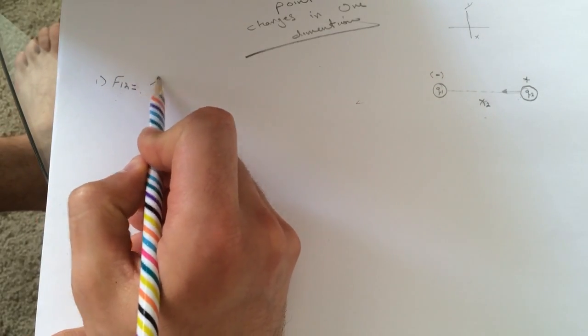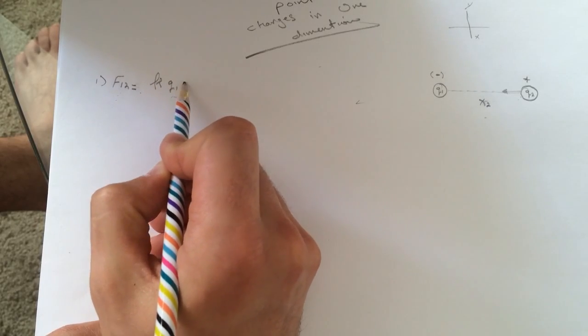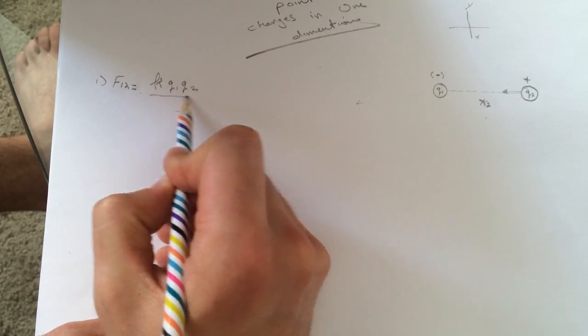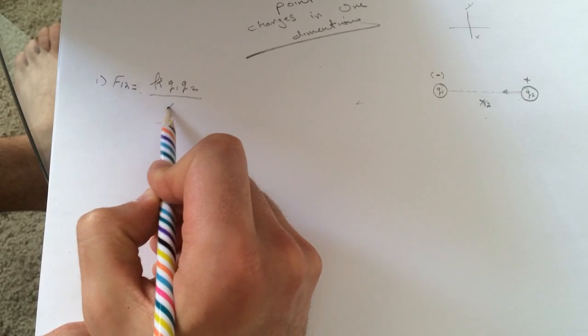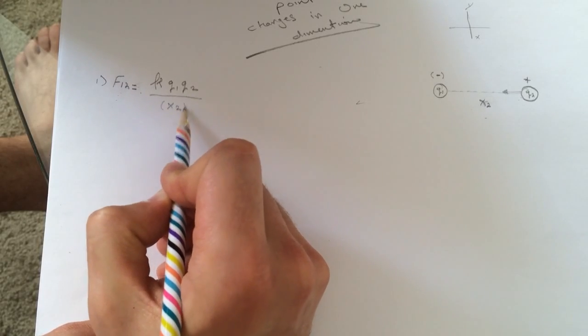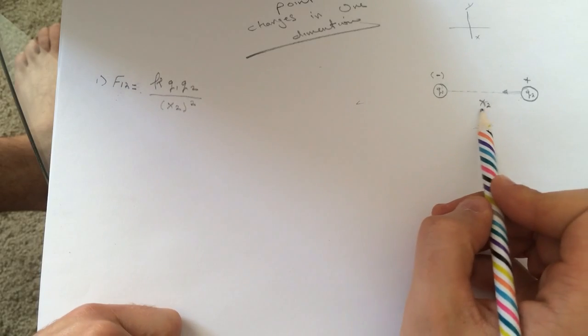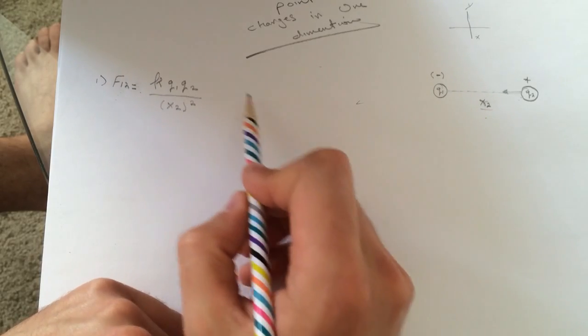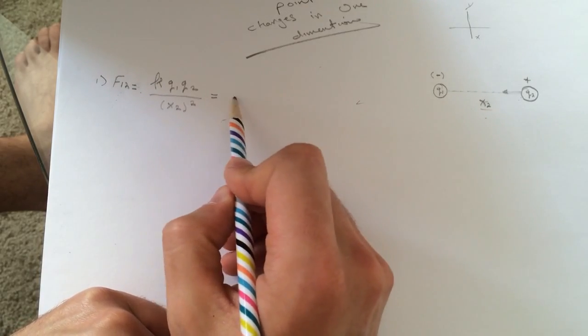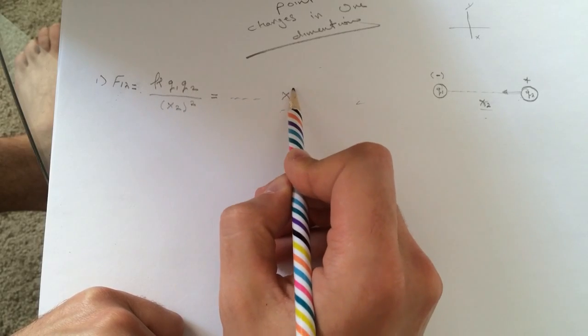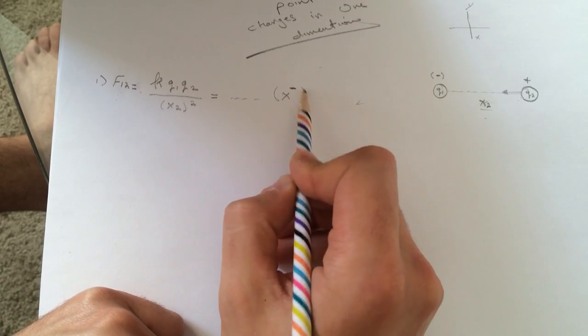So just plug in your numbers k, q1, q2 and over x2 squared. Make sure you change this to meters. And this guy you'll have a value here and it's going to be going in the x negative direction.